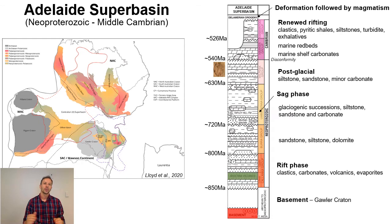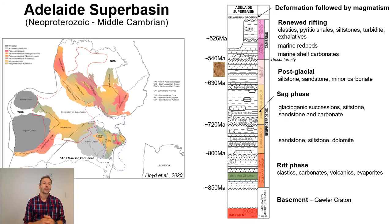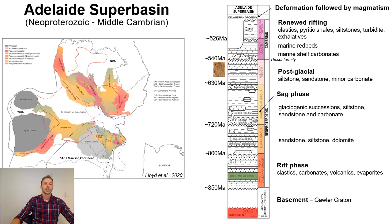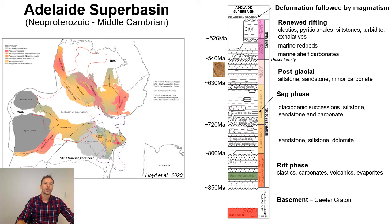The basement this succession was deposited on is not well constrained but understood to be the extension of the eastern Gawler. On the Gawler proper there are lots of IOCG deposits and a reasonable chance of metal endowment in basement to the Neoproterozoic and the Adelaide Rift Complex. Initial sedimentation was associated with rifting and contains immature clastics, bimodal volcanics but dominantly mafic volcanism, carbonates and evaporitic facies. These load the basin with source rocks.